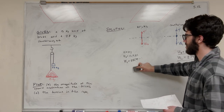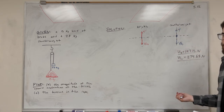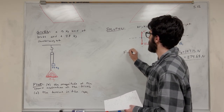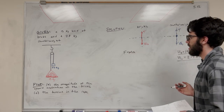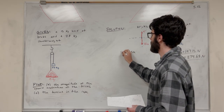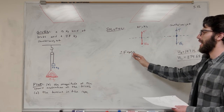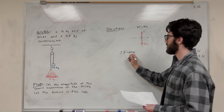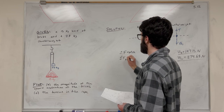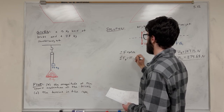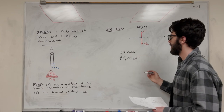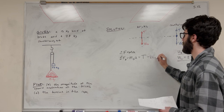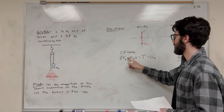Now let's do the sum of the forces. Force equals mass times acceleration, so the sum of forces equals total mass times acceleration. For the bricks: the sum of forces equals mass of the bricks times acceleration. Tension pulls upward and the weight of the bricks pulls downward, giving us: mass of bricks times acceleration equals tension minus weight of bricks.